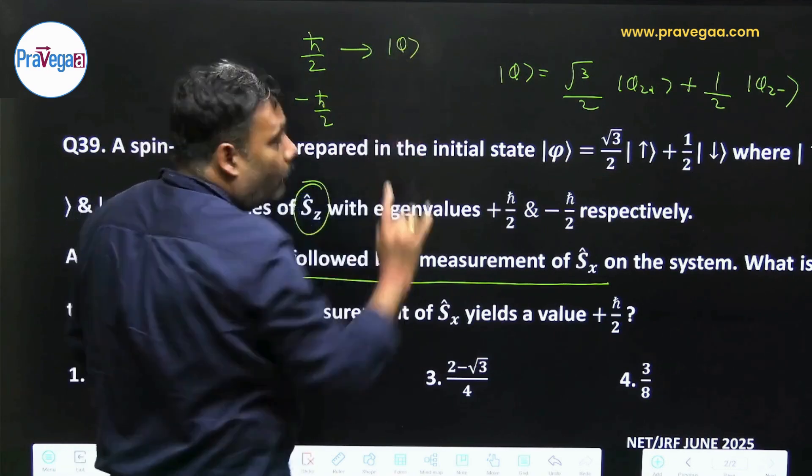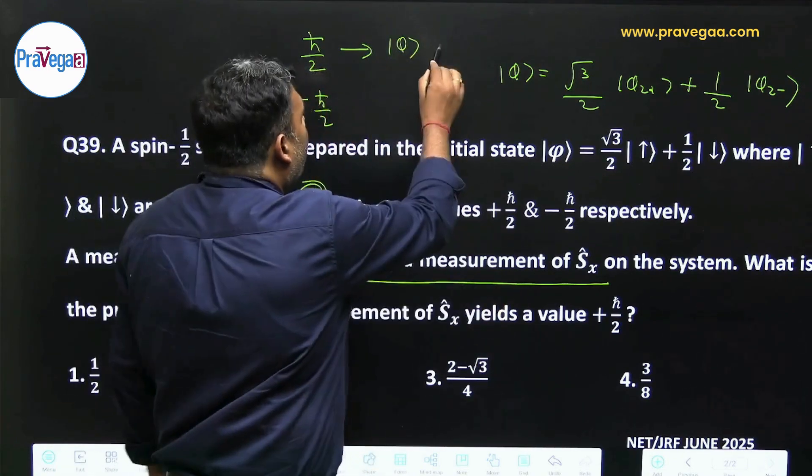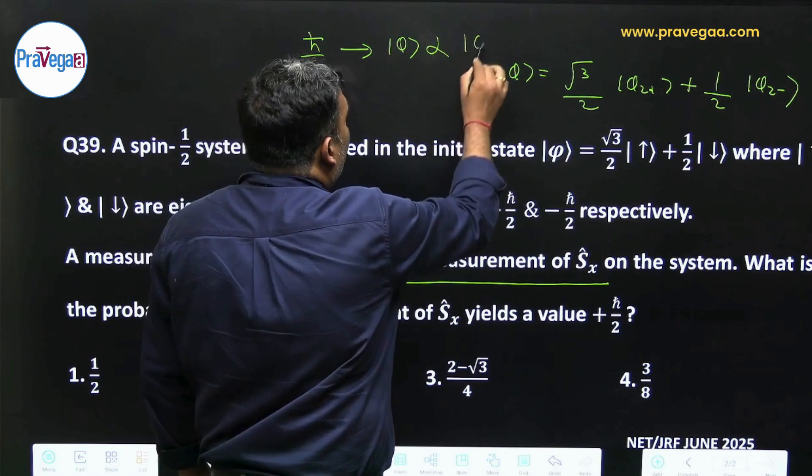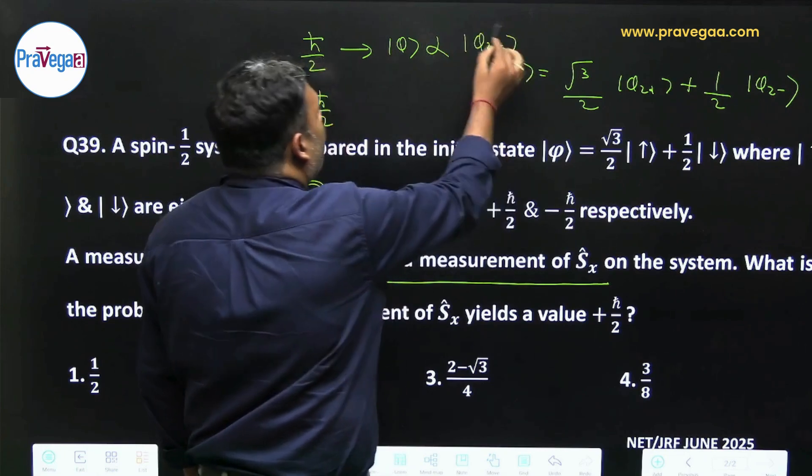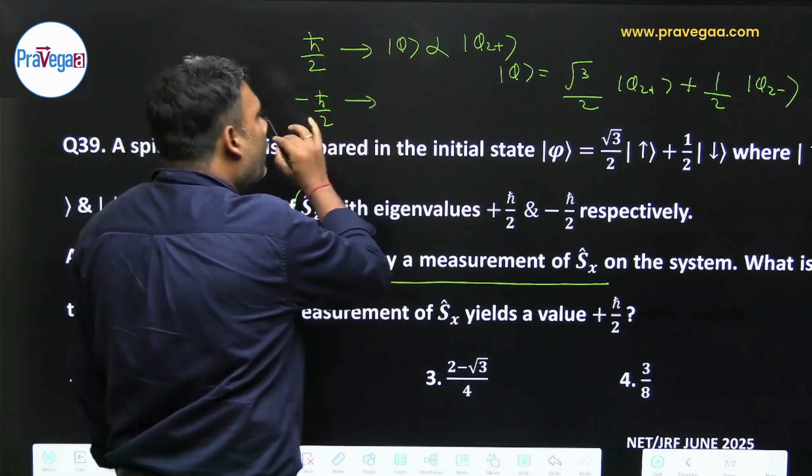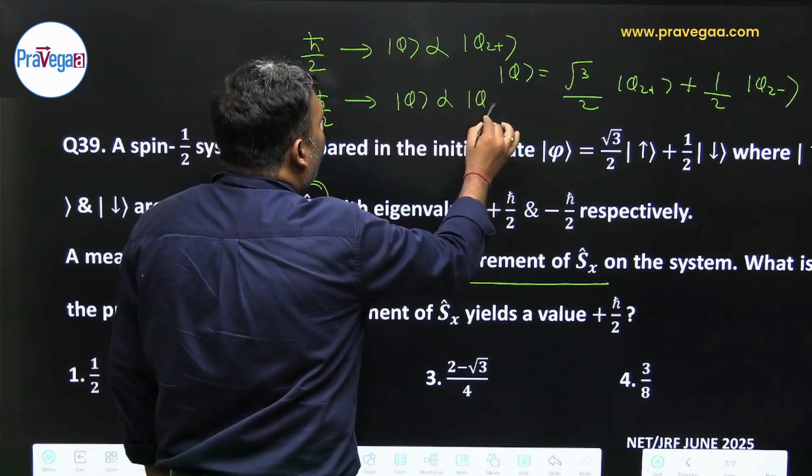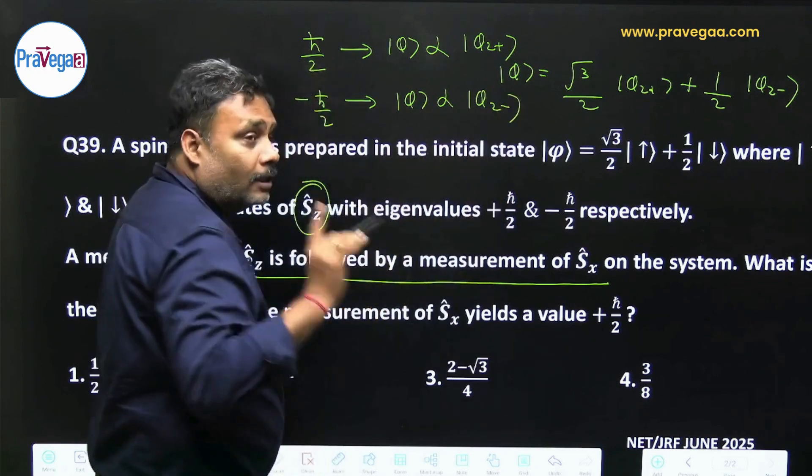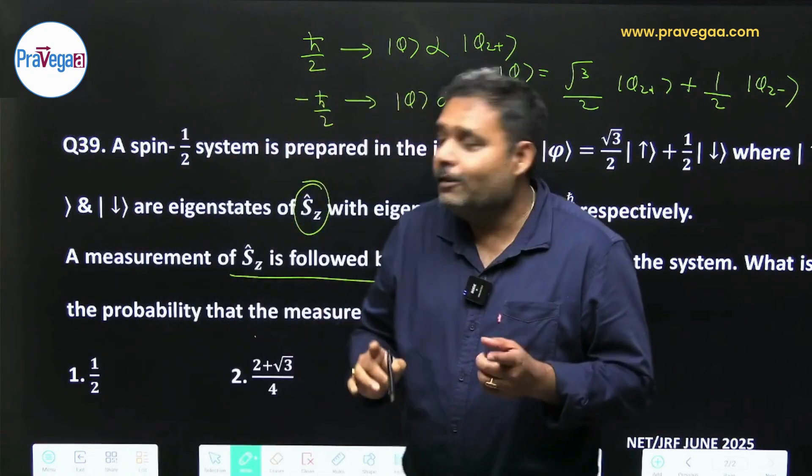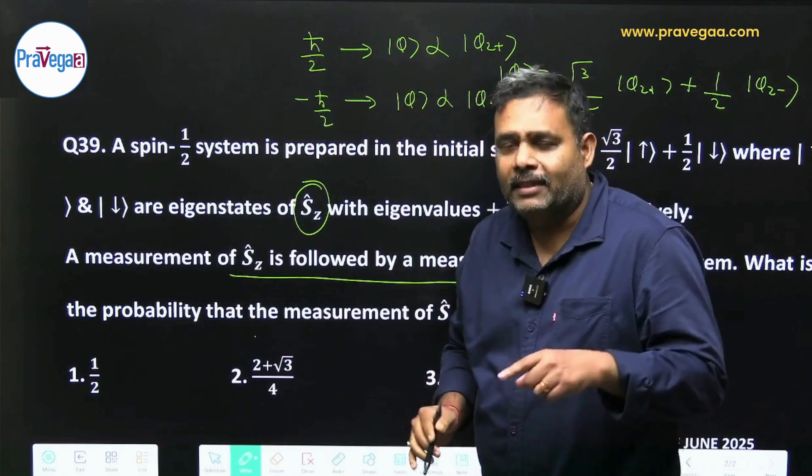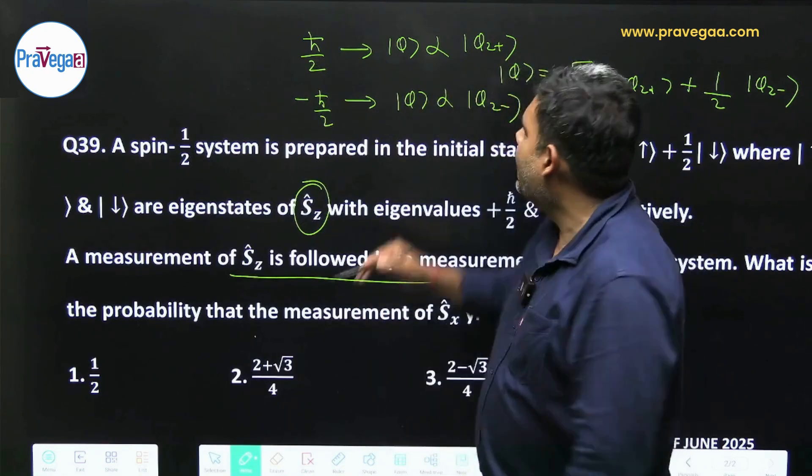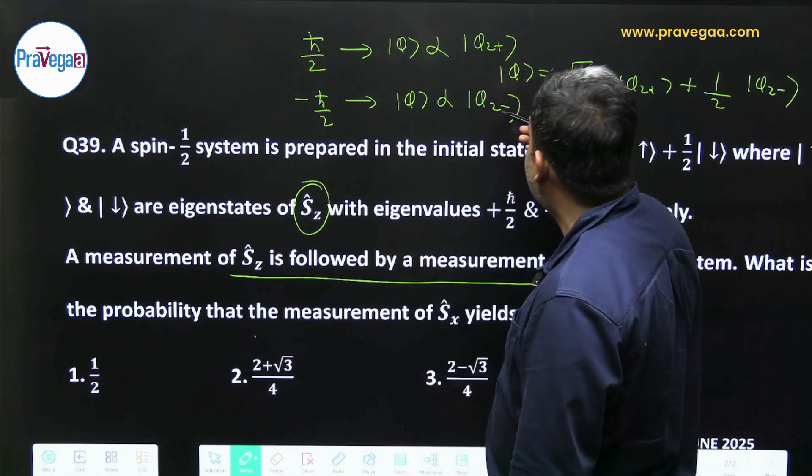So φ according to postulate 4 is proportional to φz+. So this φ is proportional to φz+ or agar ap ise measure karte ho then this φ is proportional to φz-. So now after then you have to measure your Sx. If you are going to measure either on φz+ or φz-...